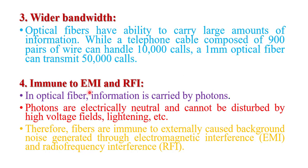The next advantage is immunity to EMI or RFI. EMI is electromagnetic interference and RFI is radio frequency interference. In optical fiber, information is transmitted in the form of light, so we can say it carries information by photons. Photons are electrically neutral in nature and cannot be disturbed by high voltage fields, lightning, etc. Therefore, the fiber is immune to externally caused background noise generated by EMI or RFI.